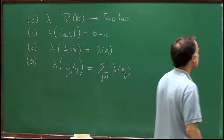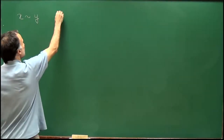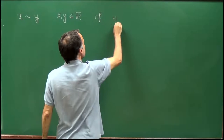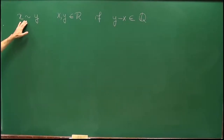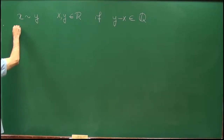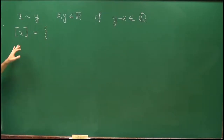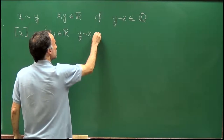So this is what we will do now. To prove that, let me introduce in R an equivalence relation. I will say that x and y are equivalent, for x and y points in R, if the difference between x and y is rational.